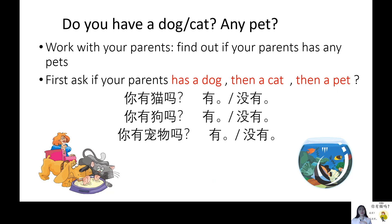Now let's learn a new measure word for animal. We use 隻. When we say a cat, we say 一隻貓. When we say a dog, we say 一隻狗. So we use 隻 for animals.